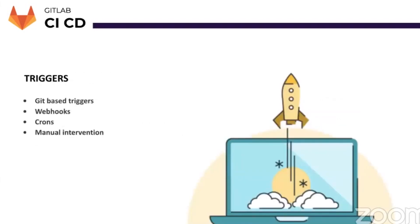Coming back to triggers — how can you trigger CI/CD pipelines? The easiest way is by performing a Git operation such as pushing to a branch, merging a pull request, or creating a tag, for which handlers are mentioned in the GitLab YAML file. This is the most frequently used and the most convenient method to trigger your CI/CD.